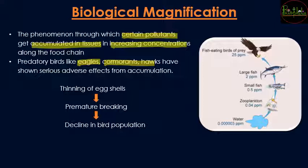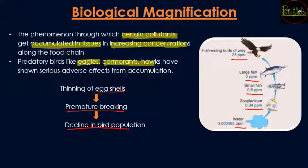In the photograph, you can see that the concentration in water is very low — in parts per million decimals. In zooplankton it increases; in small fish it is 0.5 ppm; in large fish it is 2 ppm; and at the top of the food chain it becomes 25 ppm. For birds at the top, this accumulation causes thinning of eggshells, leading to premature breaking or hatching of eggs, which causes a decline in bird population and ultimately affects the entire ecological food chain.